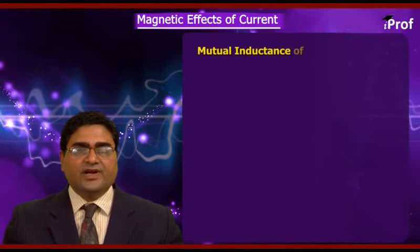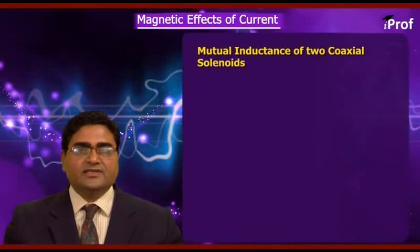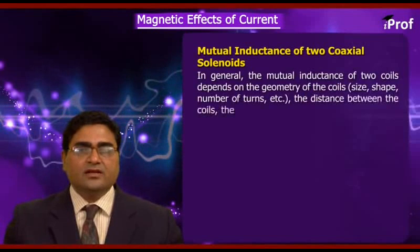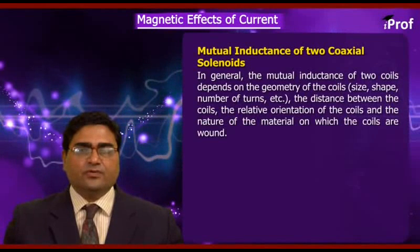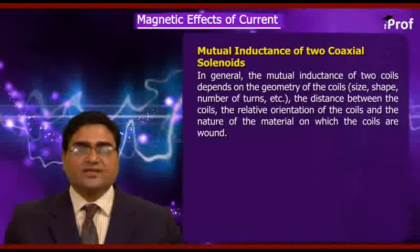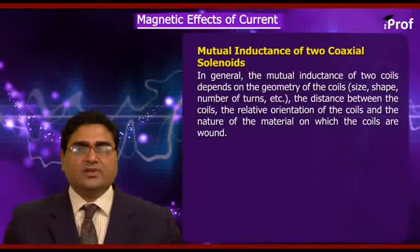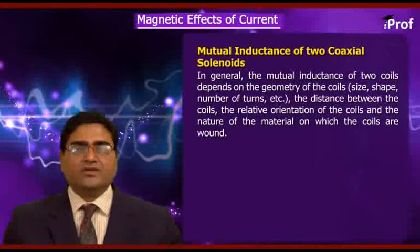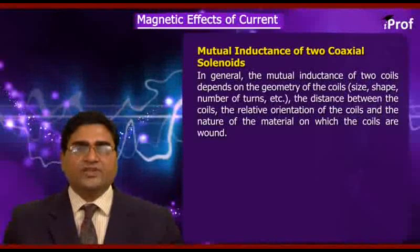Let's see mutual inductance of two coaxial solenoids. In general, the mutual inductance of two coils depends on the geometry of the coils — size, shape, number of turns, etc. — the distance between the coils, the relative orientation of the coils, and the nature of the material on which the coils are wound.